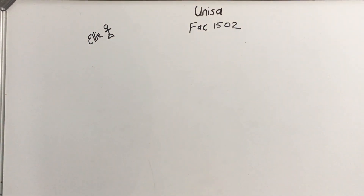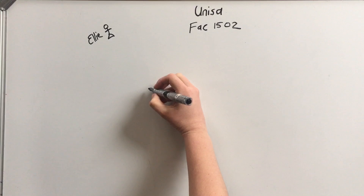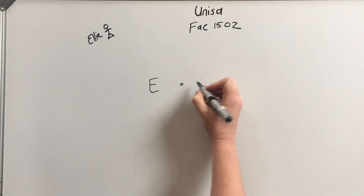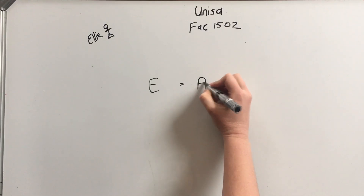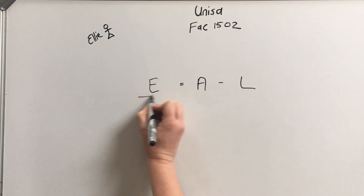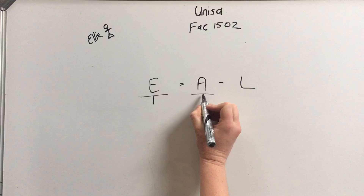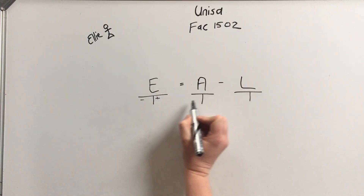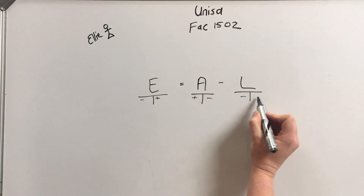Hello guys, I'm going to teach you accounting. We've been dipping our toes into certain concepts — today is the magic bullet. I've been talking about equity equals assets minus liabilities. Now the magic code is that you put these onto T-accounts and you write: minus plus, plus minus, minus plus.